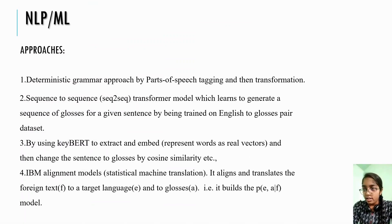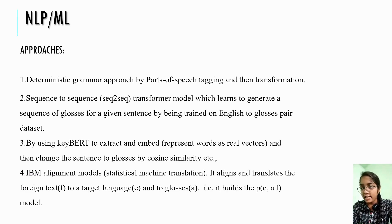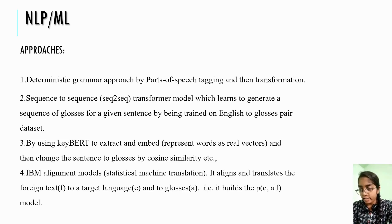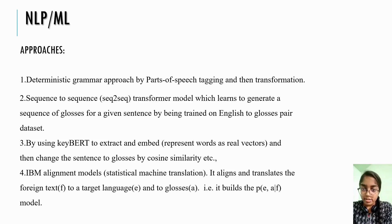Coming to the machine learning part, there are four approaches mainly. We can use parts-of-speech tagging and then transformation. We can also use a sequence-to-sequence model which will be trained by a gloss-to-text dataset. Using embeddings, we can extract and embed features and then convert the sentence to glosses. The IBM alignment model aligns and translates source text to glosses in the required target language by removing stop words. We are still working on how to convert sentences to glosses through ML using the sequence-to-sequence model.